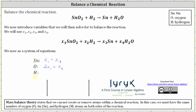Moving on to hydrogen, notice how we have two atoms of hydrogen on the left and two atoms of hydrogen on the right. Therefore, two times x sub two must equal two times x sub four, or two x sub two must equal two x sub four.